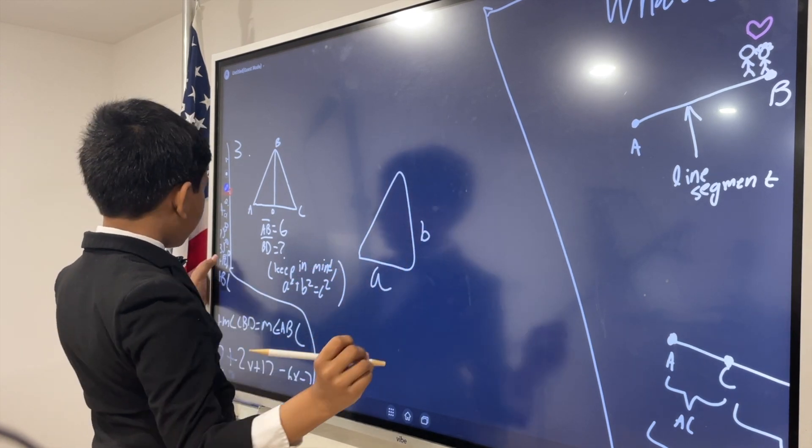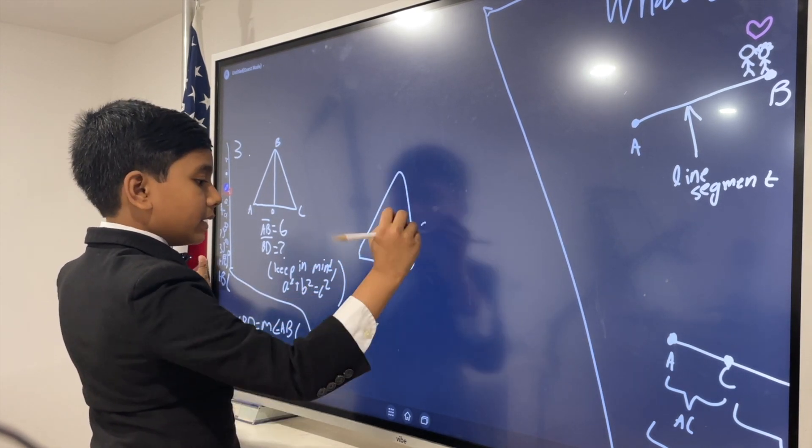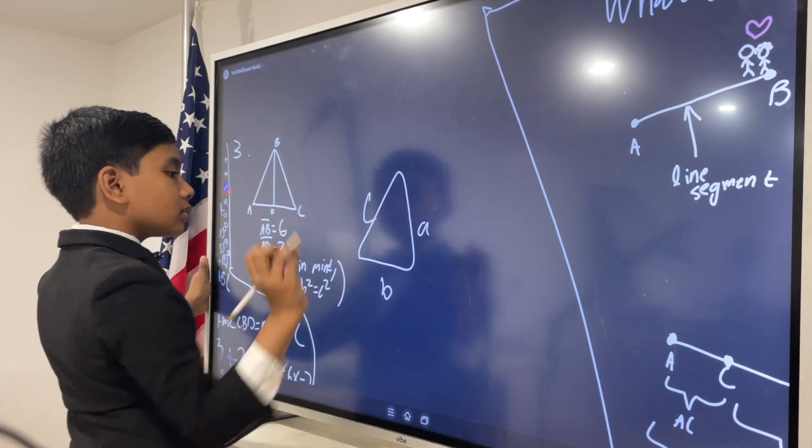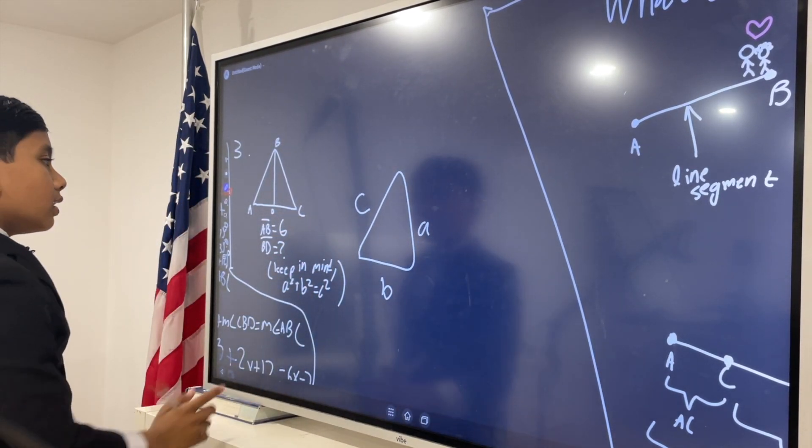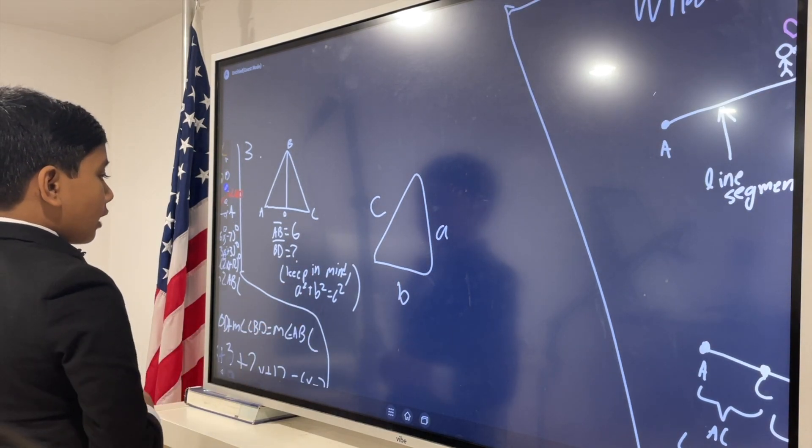As long as you keep in mind the Pythagorean theorem. A squared plus B squared equals C squared. This could be A. This could be B. This doesn't really matter. But, C is always the hypotenuse, the longest side.